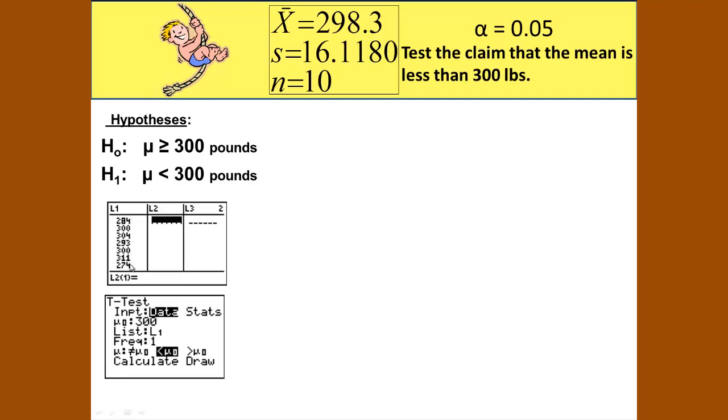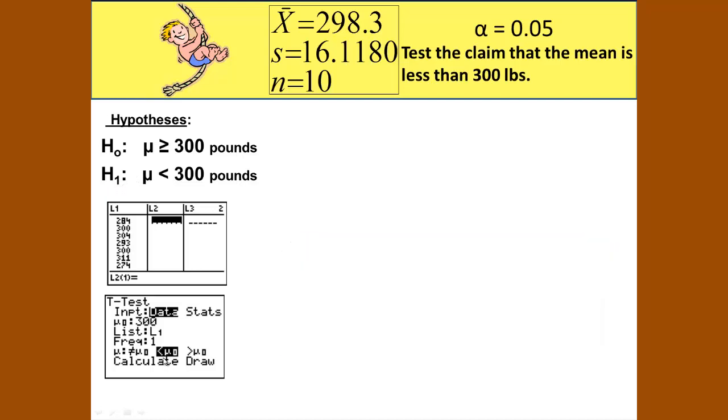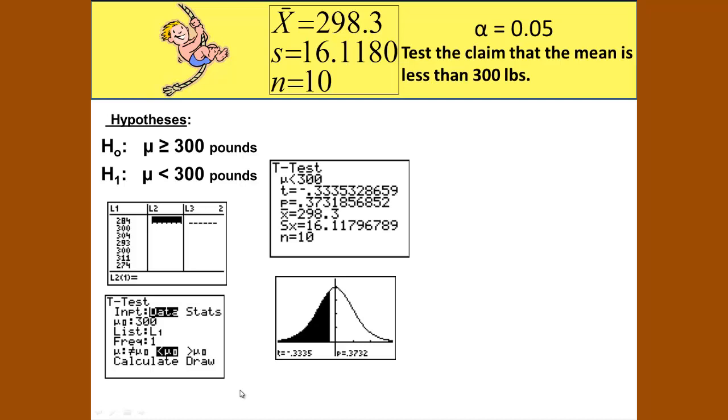You should put your information in list 1. It should be there from where you found your x̄ to start with doing 1-var statistics. But this time you should go to t-test. Remember your input is your data. Your μ₀ is the 300 pounds that we are comparing it to. Your information is in list 1 with the frequency of 1. The claim is the alternate hypothesis H₁, which is less than. Then you should calculate, and Mrs. Borlaug has also done the draw here, and that gives us a p-value. Our alpha is 0.05 and our p-value is 0.3732.